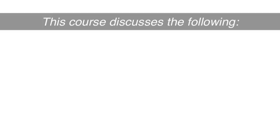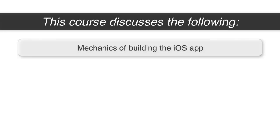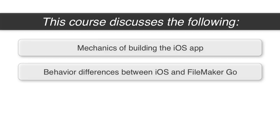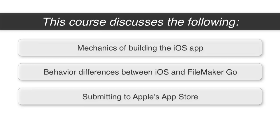This is a brand new capability — it didn't exist before 2016. So this video has brand new material for FileMaker developers who are interested in making their vertical market application accessible to a broader audience. We're going to talk about the mechanics of building the iOS app itself, as well as the differences between the iOS app behavior and FileMaker Go. We're also going to talk about the considerations for submitting to Apple's App Store and making sure that you're within their guidelines.